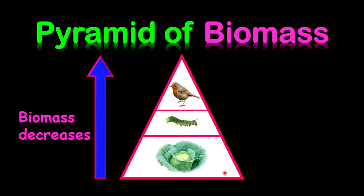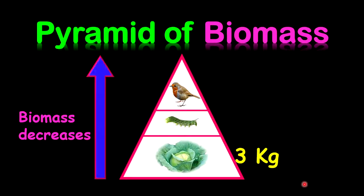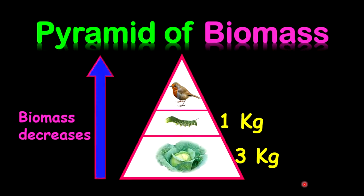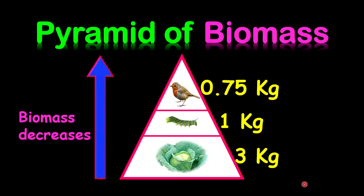For example, we have three kilograms of cabbage. We might have one kilogram of caterpillar in total biomass. And we may have less than one — so let's take, for example, 0.75 kilograms in biomass for the bird.